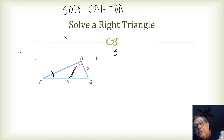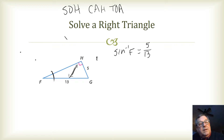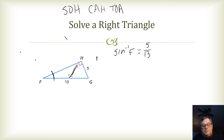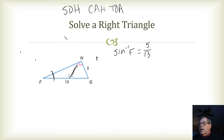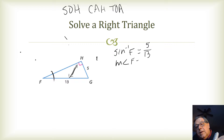The inverse sine of F equals 5 over 13. Using the calculator as shown in the previous video, I'm going to take the inverse sine of 5 over 13, close my parentheses, and round it to the nearest degree. That gives us 23.